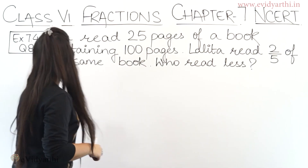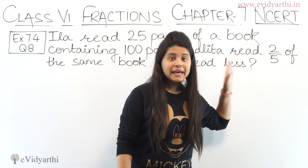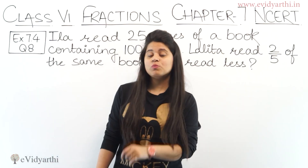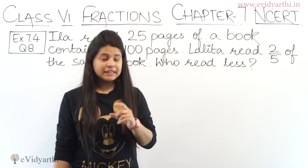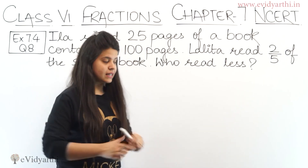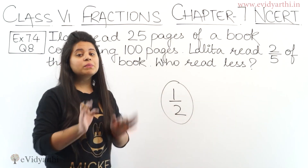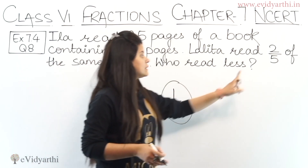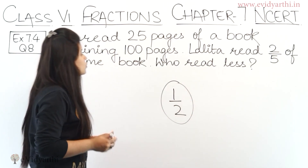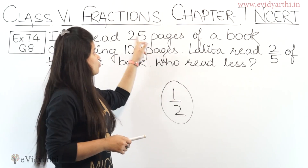Lalitha reads 2 by 5 of the same book. Now Lalitha reads 2 by 5 — meaning how many parts she has read. The fraction concept here is: if I say I have read half a book, I can say 1 upon 2, which is half. So here, 2 by 5 part of the book is read by Lalitha. We have given numbers, so we will work with fractions.